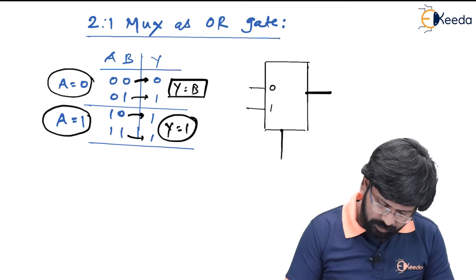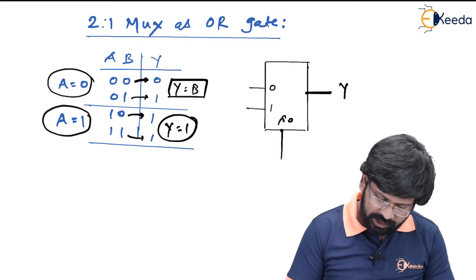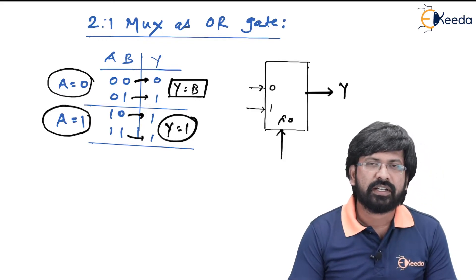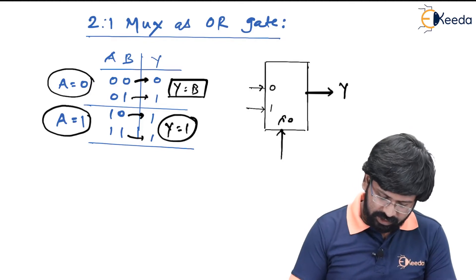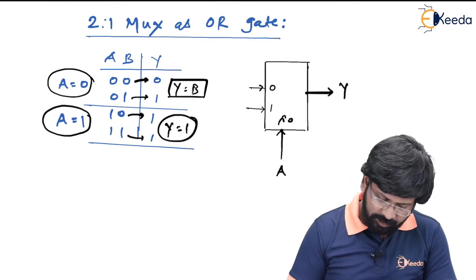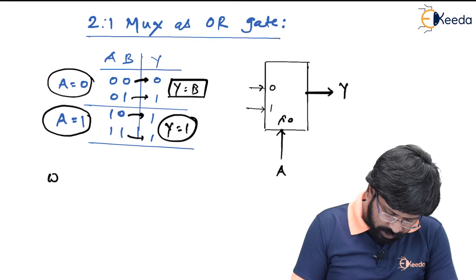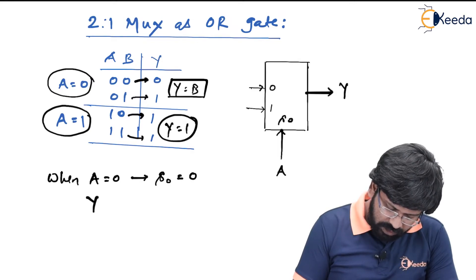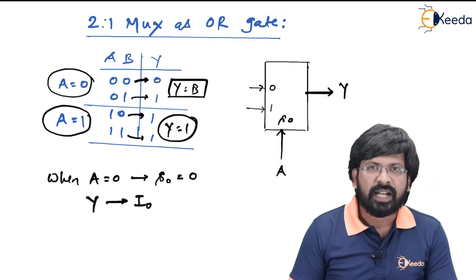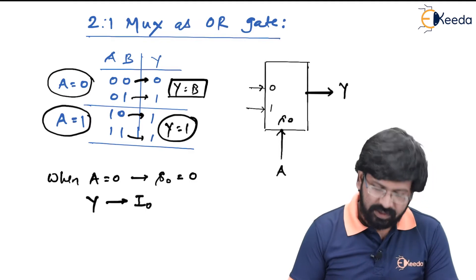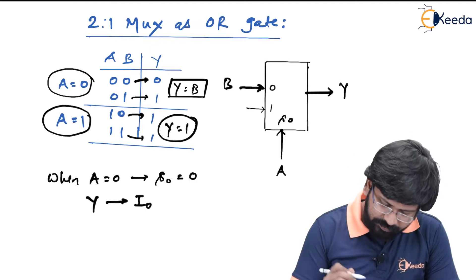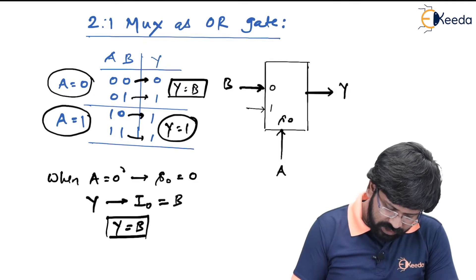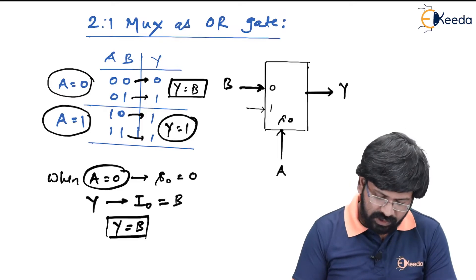I0 and I1 are the inputs, Y is the output, and S0 is the select line. As we discussed for the NOT gate, we treat the select line input as A. According to the requirement, when A equal to 0, it causes S0 to become 0, therefore output gets connected to I0. The output should be equal to B, therefore I will connect I0 to B, so Y is equal to B. When A equal to 0, Y is equal to B — this is the first half of the OR gate nature.